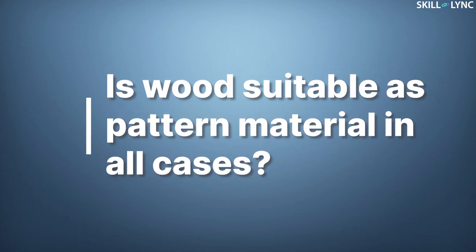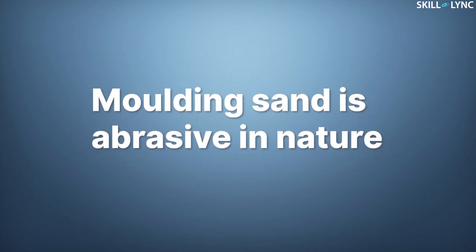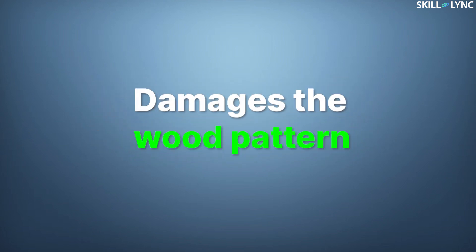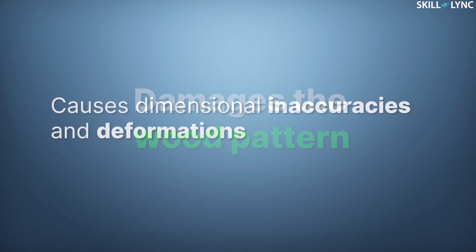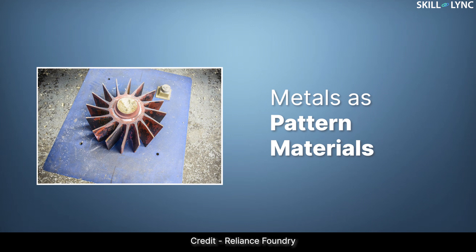After discussing wood as pattern material, do you guys think that wood can be used as a pattern material everywhere? Well, the answer is no. During large-scale productions, the molding sand is abrasive in nature. This abrasive sand can damage the wood pattern causing dimensional inaccuracies and deformations. This is where metals come in as a pattern material.